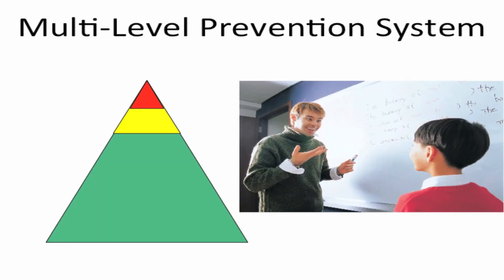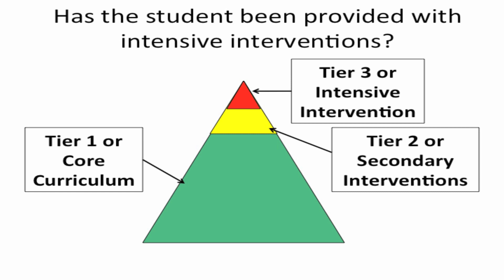Understanding students' response to more intensive interventions helps us know whether students are able to make progress when provided with instruction that meets their needs. Multi-level prevention systems provide a systematic way to ensure that students are provided with intensive interventions based on need. Secondary or Tier 2 interventions utilize evidence-based intervention programs, and Tier 3 interventions provide intensive intervention tailored to individual student needs. When a student's data suggests that they are unresponsive to a continuum of supports ranging from high-quality core instruction to intensive individualized intervention, it may suggest they have a severe learning or reading disability and may benefit from Bookshare.